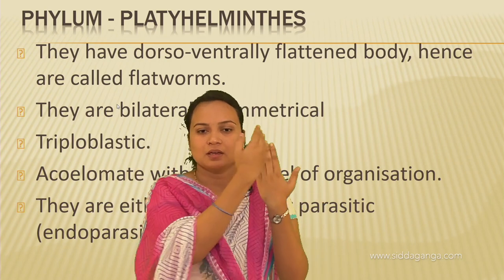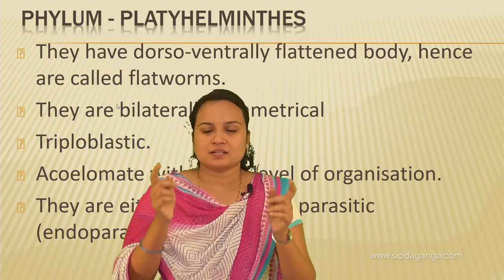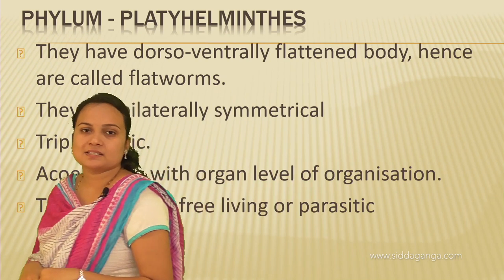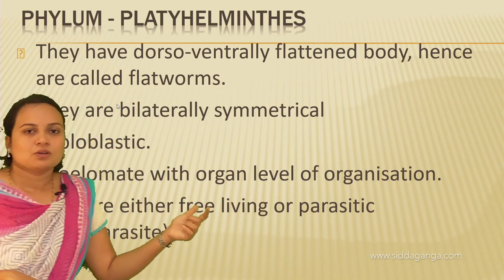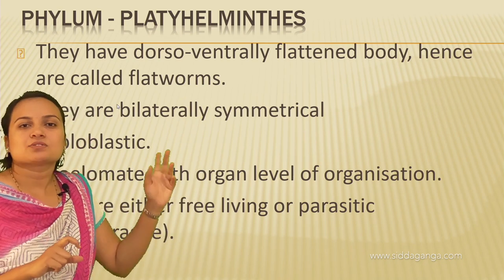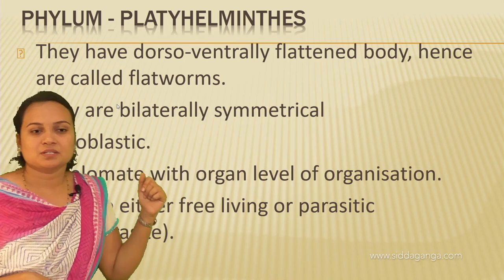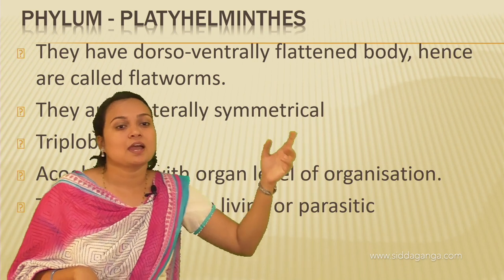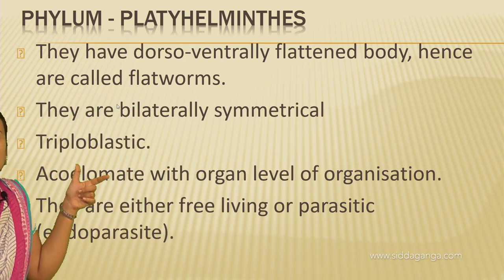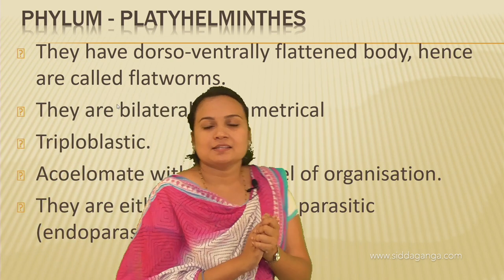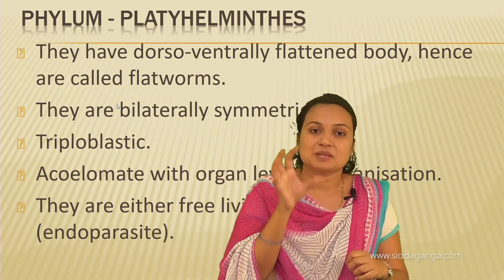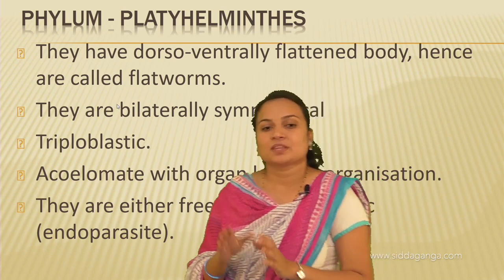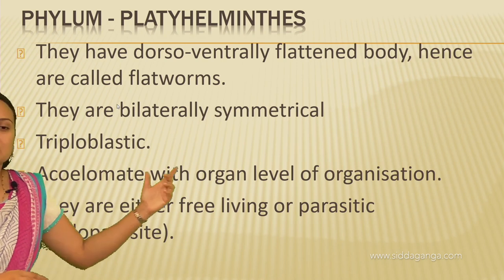Nematodes are bilaterally symmetrical, triploblastic, and pseudocoelomate animals. The coelom is present but it is a false coelom — the mesodermal cells are arranged in pouches scattered in the cavity. These pouches constitute the pseudocoelom, and the organisms are called pseudocoelomates. Platyhelminthes were acoelomates, but nematodes are pseudocoelomates.